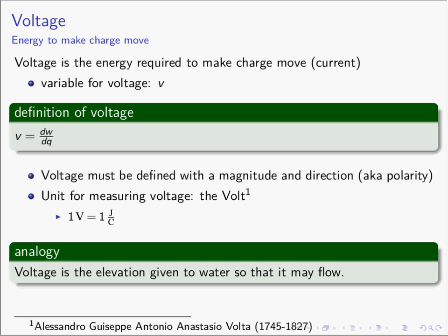So voltage is a vector quantity — it has a magnitude and a direction. The direction of voltage is called polarity. The unit for measuring voltage is the volt, which is a joule per coulomb, named after an Italian physicist who lived in the 18th century. So voltage is an energy imparted to charge, and if charge has this energy, it now has the potential to move.